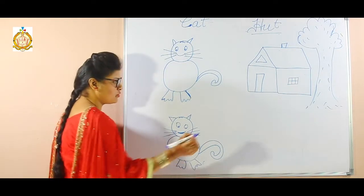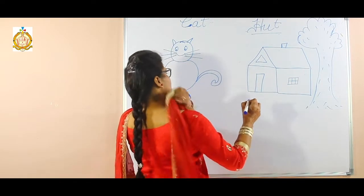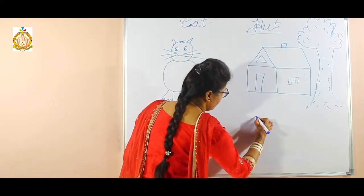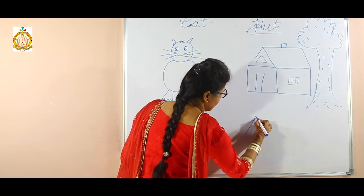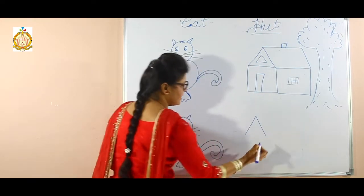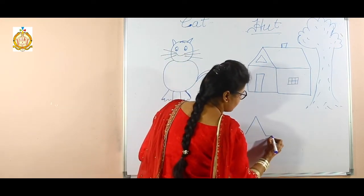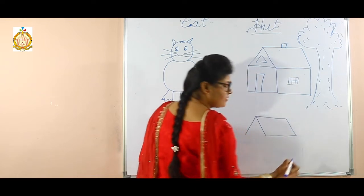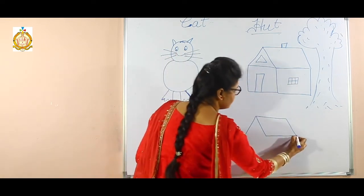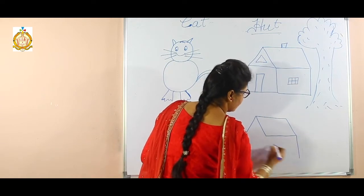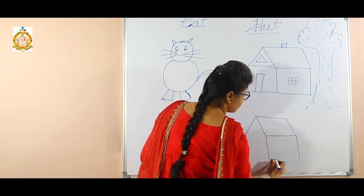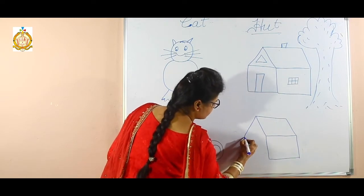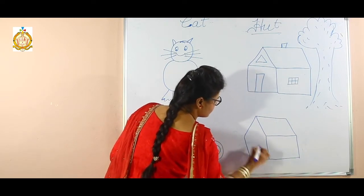Now I am going to draw a hut. What I am going to draw? Draw a hut. First draw V like this, then like this — rectangle. Then make a square like this, and again like this.